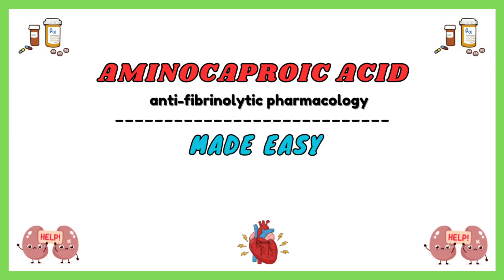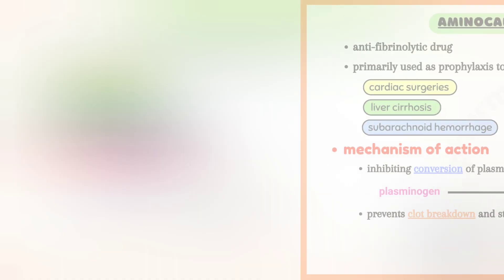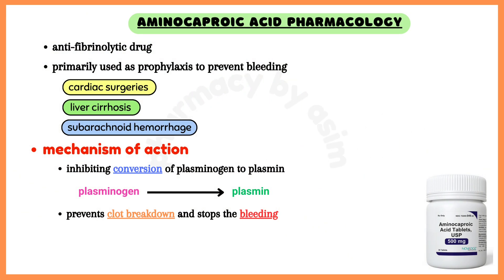Aminocaproic acid is an antifibrinolytic drug. It is primarily used as prophylaxis to prevent bleeding after cardiac surgeries, as well as in patients with cirrhosis. In cirrhotic patients, the liver is unable to synthesize clotting factors. This drug is also used to prevent recurrence of subarachnoid haemorrhage.